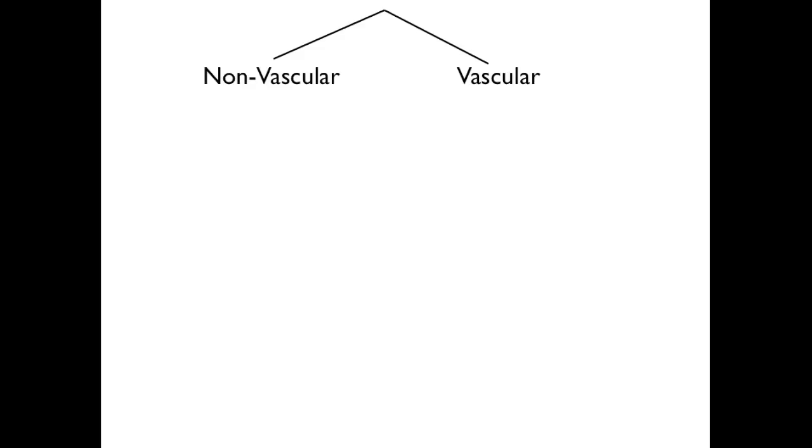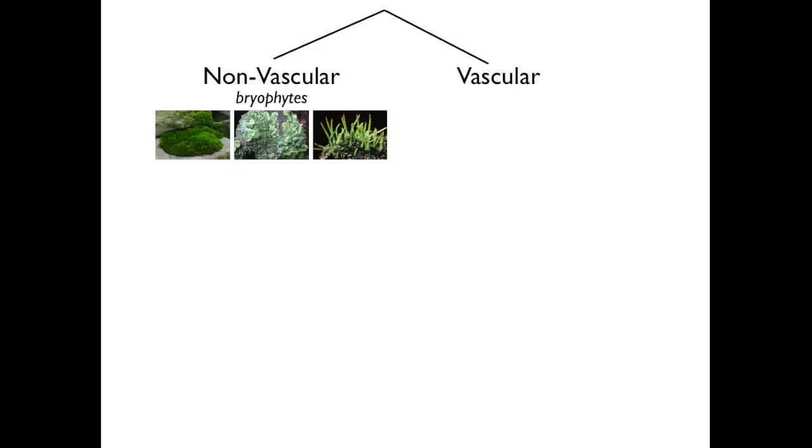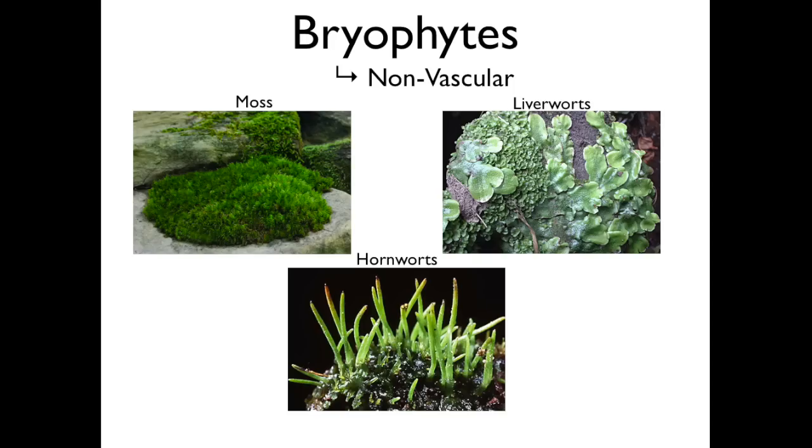Plants that don't contain vascular tissue are called bryophytes. Bryophytes include moss, liverworts, and hornworts. These plants usually rise a maximum of a few centimeters above the surface they are growing on.